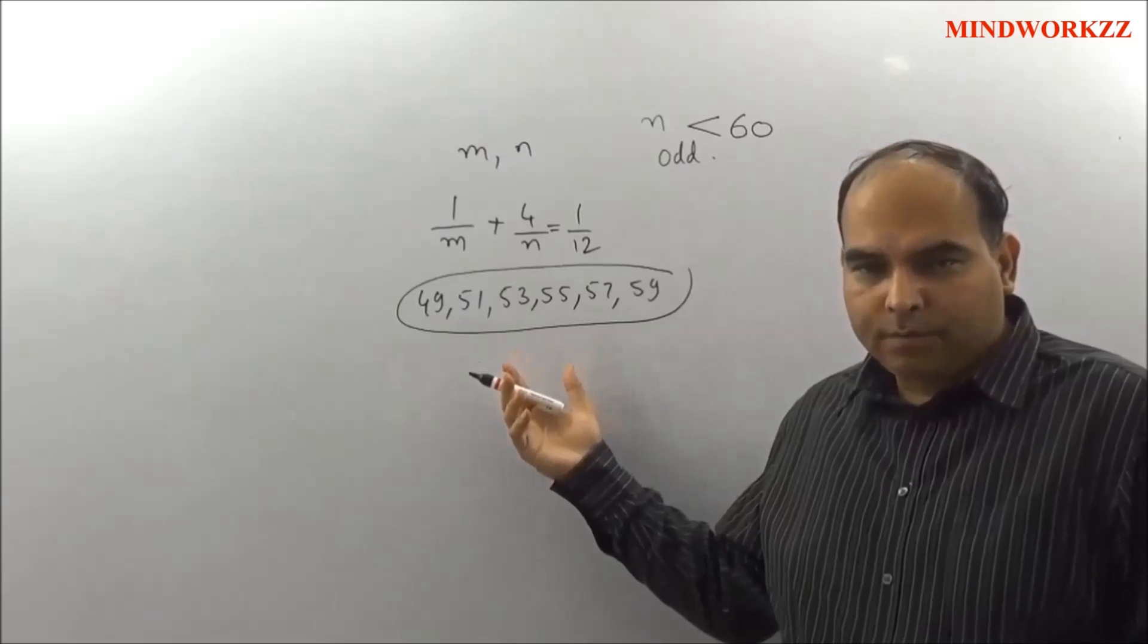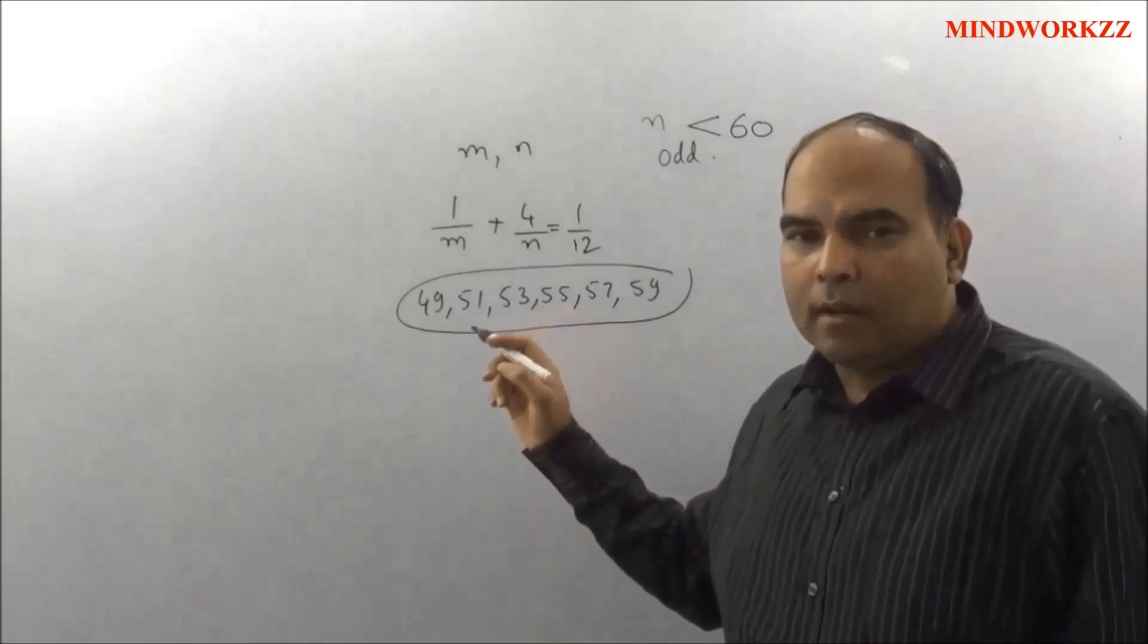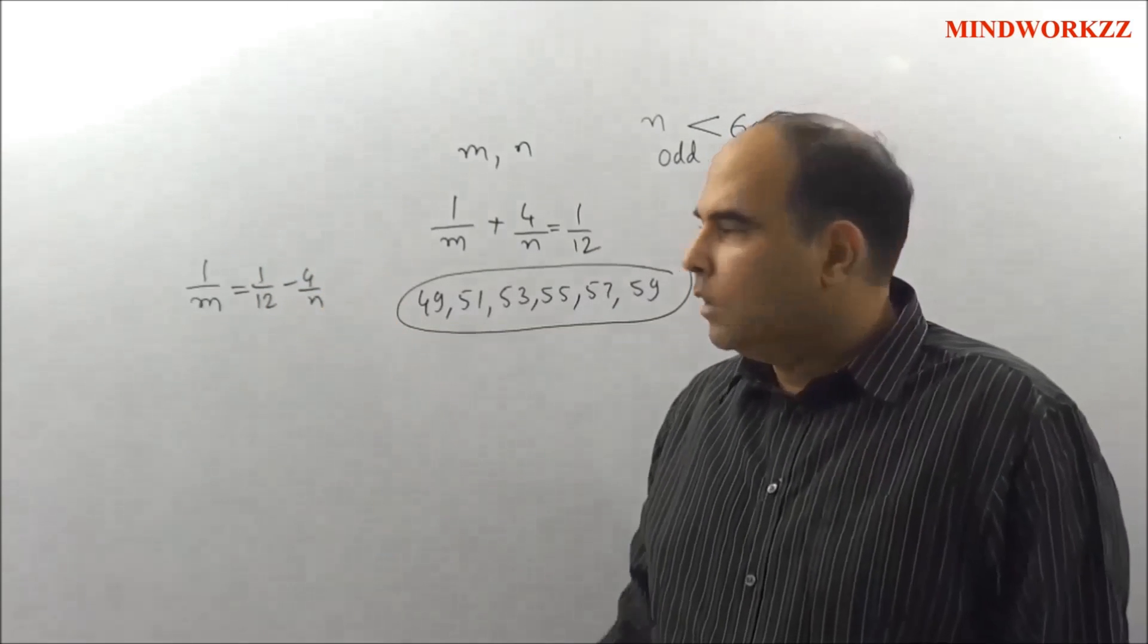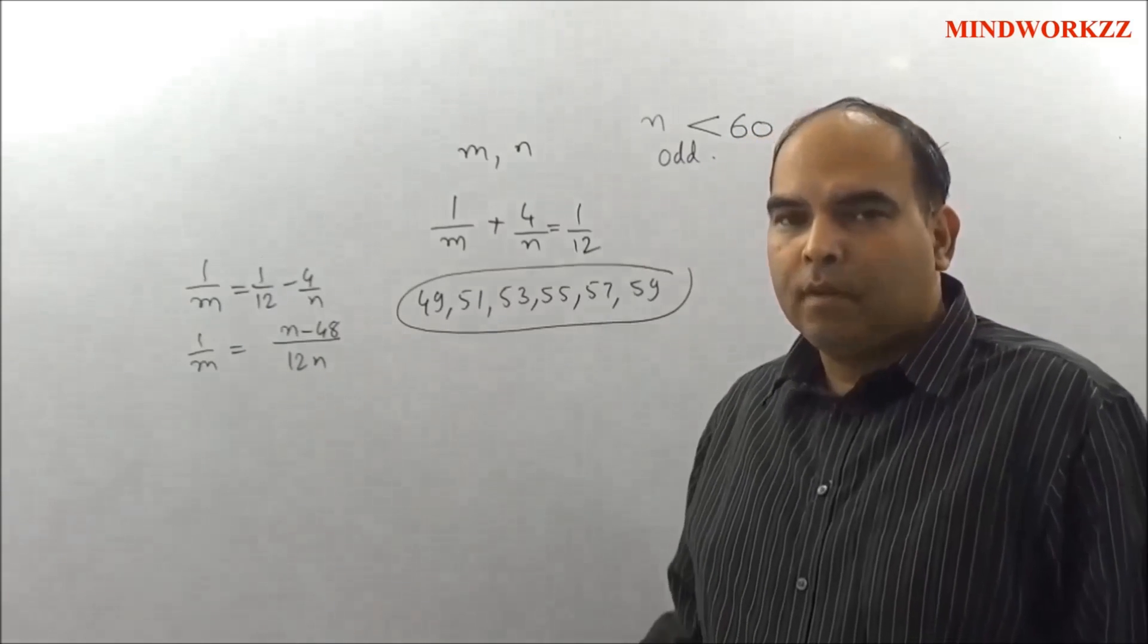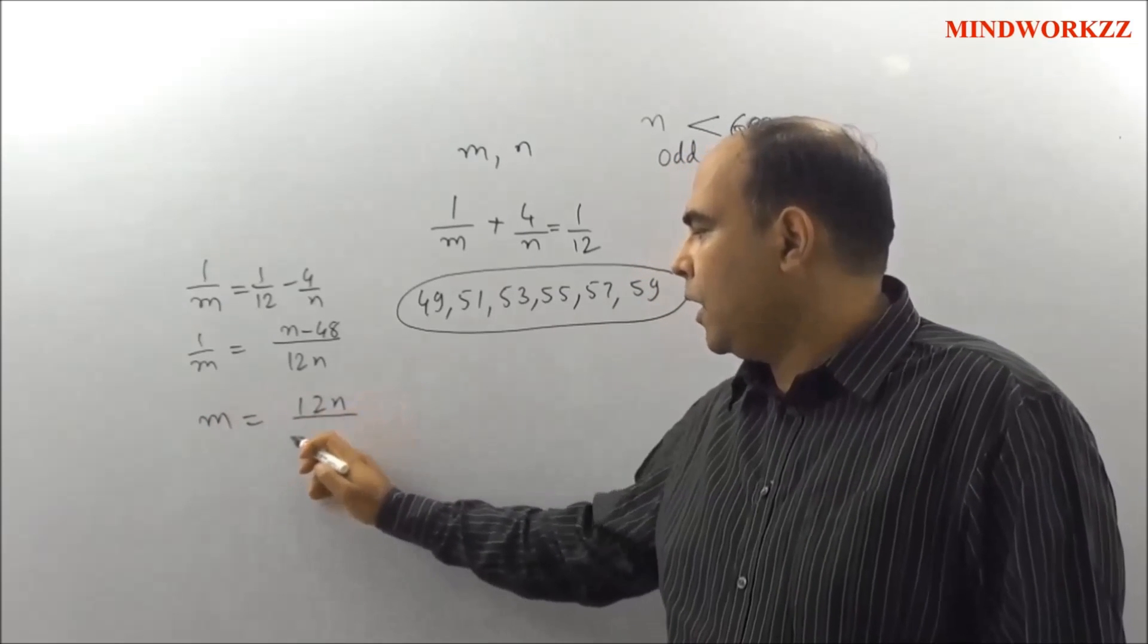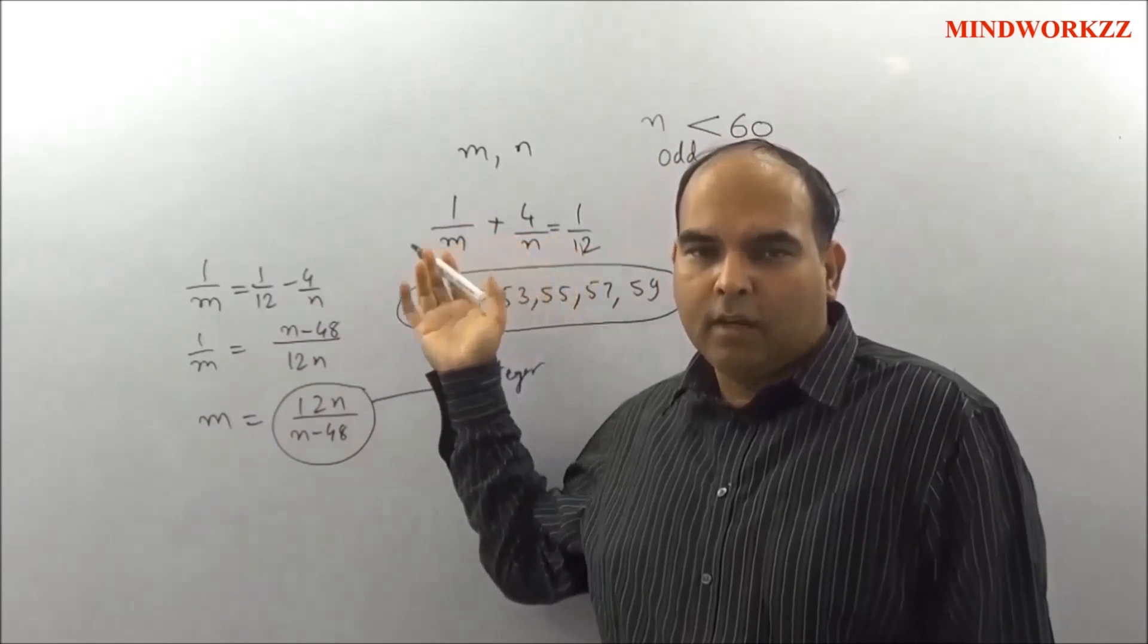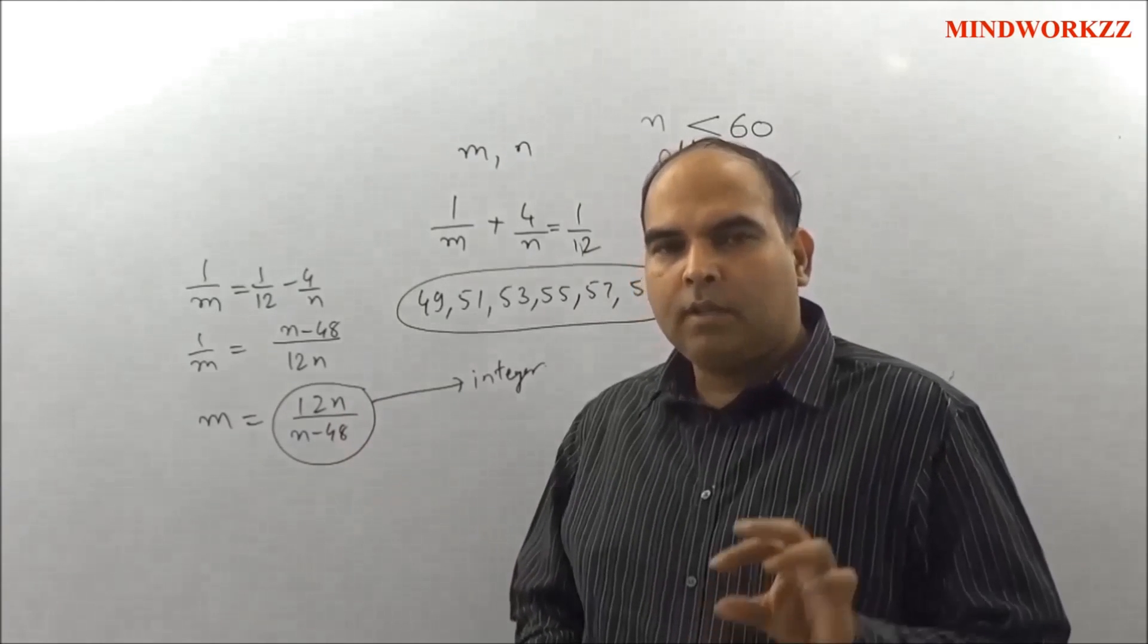Now you need to check with these 6 values which of these values of n gives you a value for m which is also an integer. So the problem does not end here because you need to do one more step. To do that, the best approach is to rewrite the equation in this form: 1/m = 1/12 - 4/n. If you take the LCM on the right inside, you will get (n - 48)/(12n) = 1/m, which essentially tells you that m = 12n/(n - 48). So we want this expression to be an integer. Since m is an integer, you want this expression 12n/(n - 48) to be an integer. This is the second thought inside this question.